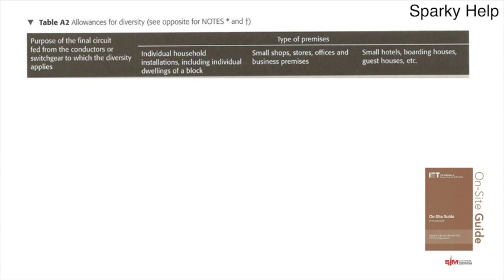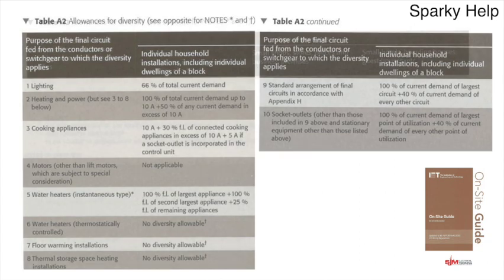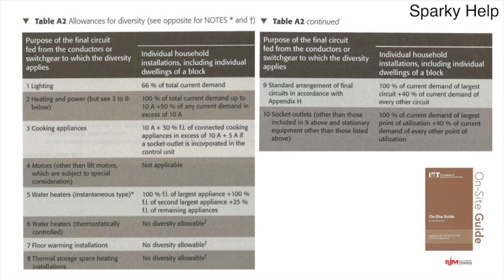The On-Site Guide breaks it down by type of property and circuit. It covers household, small shops, and small hotels — you pick the best description. Remember, the On-Site Guide only covers installations up to 100 amps, whether single-phase or three-phase. For individual household installations there are 10 circuits listed. Lighting, for instance, is 66% of the total current demand — meaning 66% of the lights are assumed on at any time, which is quite generous. Heating and power has sub-categories for items like cookers, motors, water heaters, thermostatically controlled, instantaneous, underfloor warming, or thermal storage, with: 100% of total current demand up to 10 amps, then 50% of any excess over 10 amps.